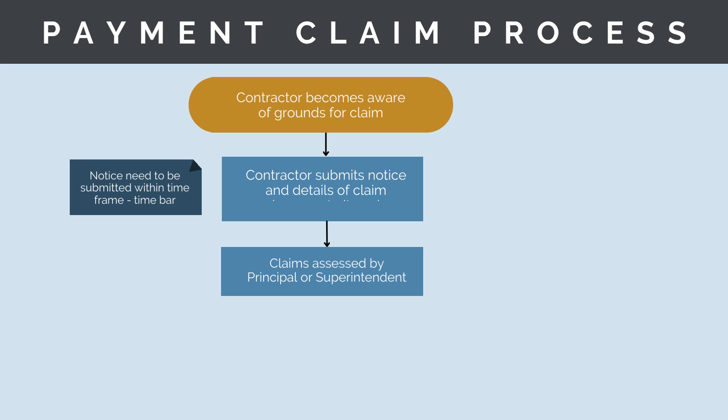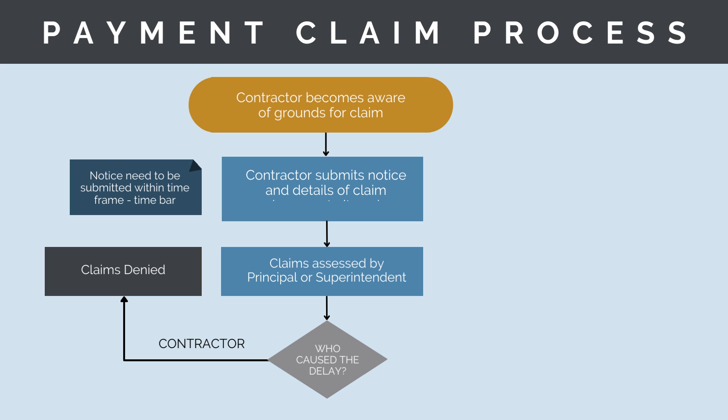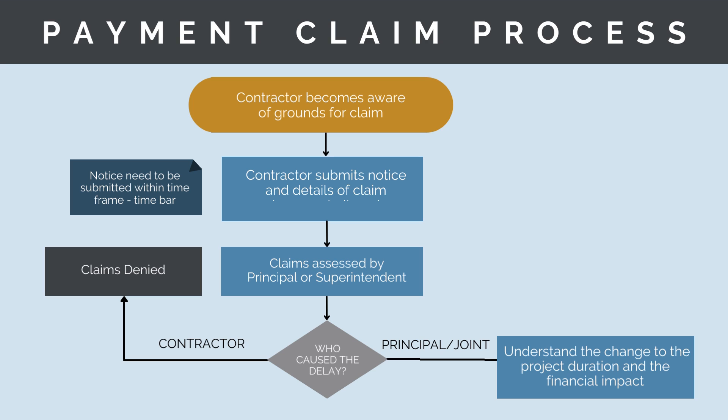The claim will then be assessed by the principal. They'll want to understand the cause and effect behind it. The cause of the claim is an allocation of responsibility — who caused the delay? If the contractor caused the delay, then there is obviously no grounds for a claim. If the principal or both parties were responsible together, then there is justification for a claim.